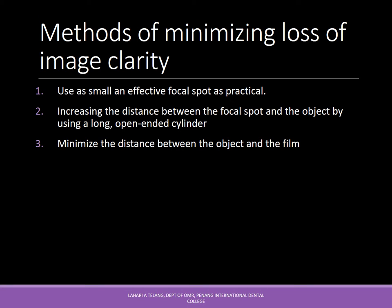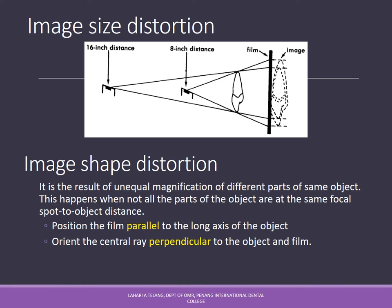To minimize loss of image clarity, use a small effective focal spot, increase the distance between the focal spot and the object by using long open-ended cylinders for x-rays, and minimize the distance between object and film. To avoid image size distortion, maintain a distance of at least 8 to 16 inches between the x-ray source and the object/film. To reduce image shape distortion — which results from unequal magnification when different parts of the object are at different focal-spot-to-object distances — the film should be parallel to the long axis of the object and the central ray should be perpendicular to both object and film.